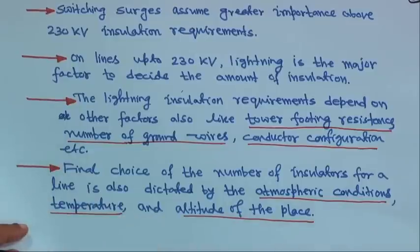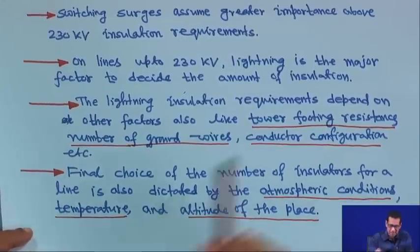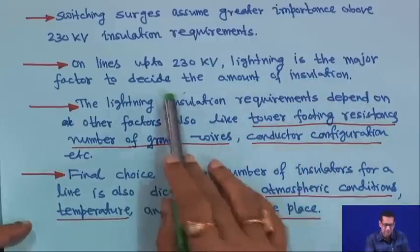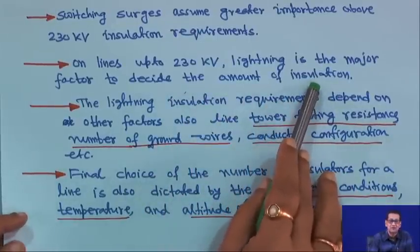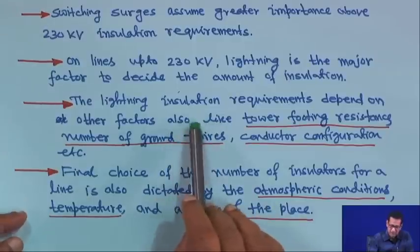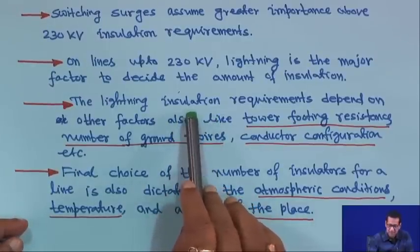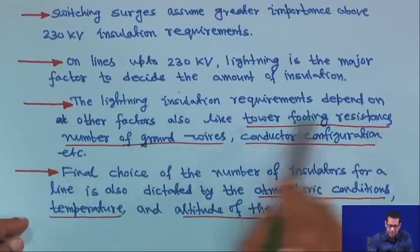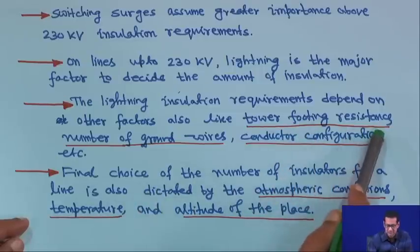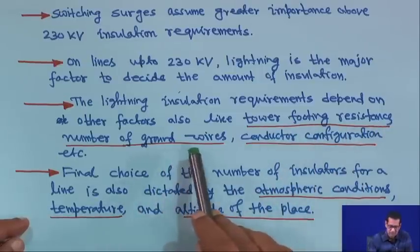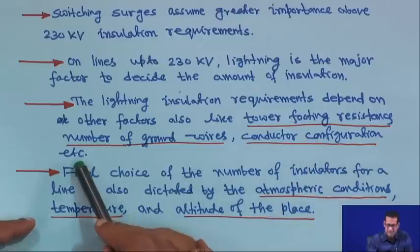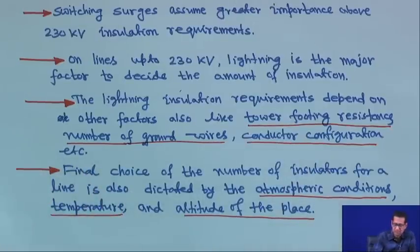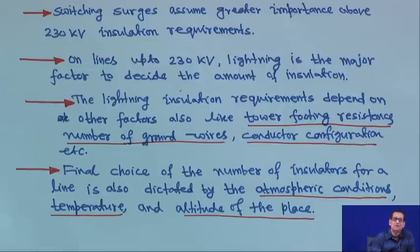A lot of protection is required — you have lightning arresters and other things. Lightning insulation requirements also depend on other factors like tower footing resistance, number of ground wires, and conductor configuration. Tower footing resistance and number of ground wires are required because grounding is another important factor. Lightning surges are a very important phenomenon in power systems.